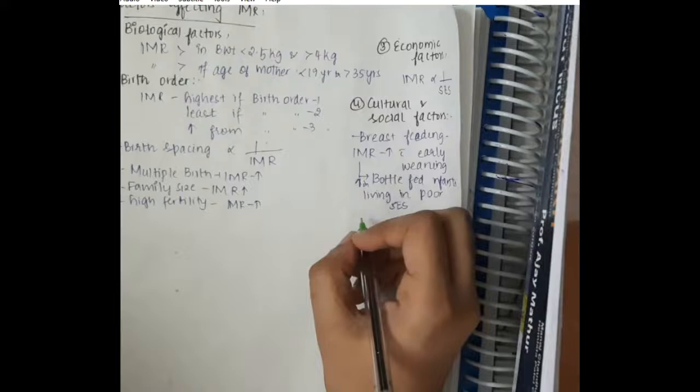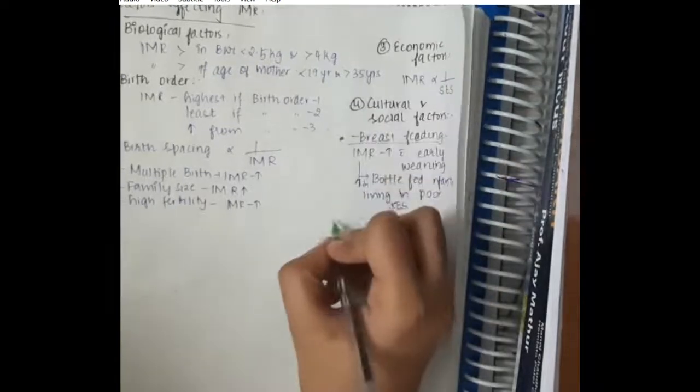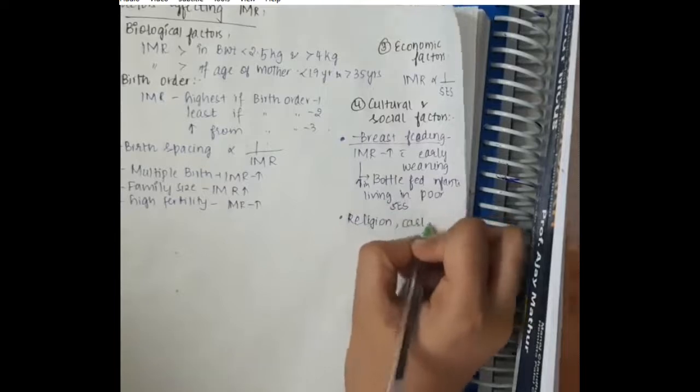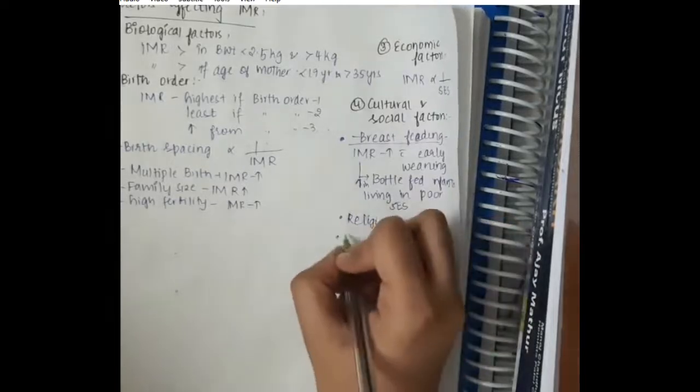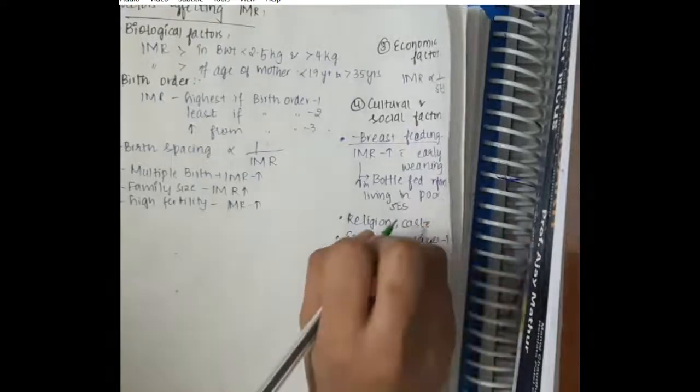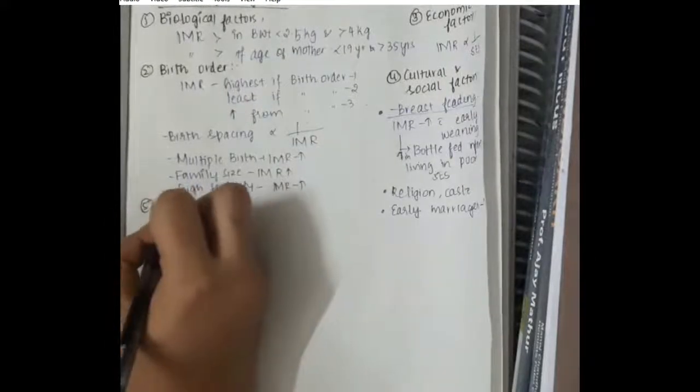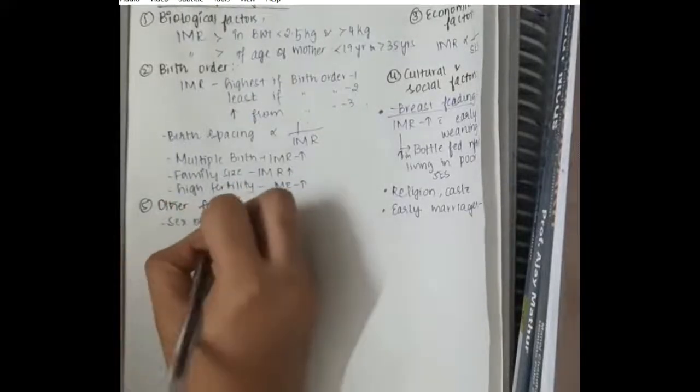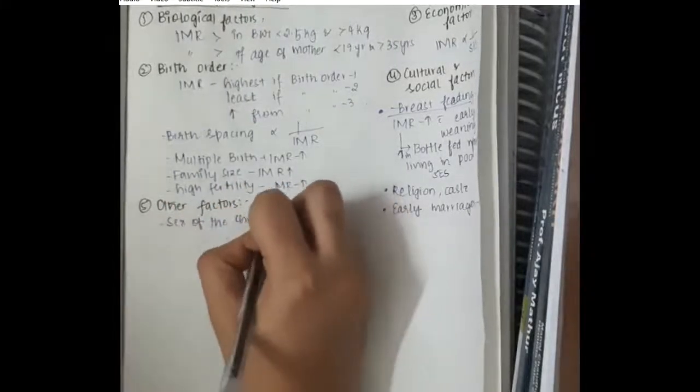Infant mortality rate also varies based on the religion and caste of the people. Then, if there are early marriages, then there is higher infant mortality rate. For younger couples, it is difficult for them to handle, so there can be increased infant mortality rate.